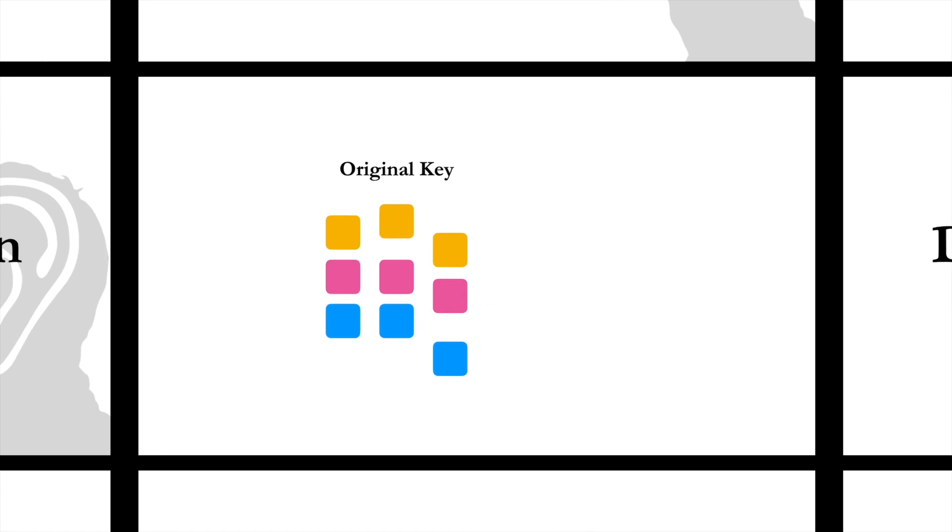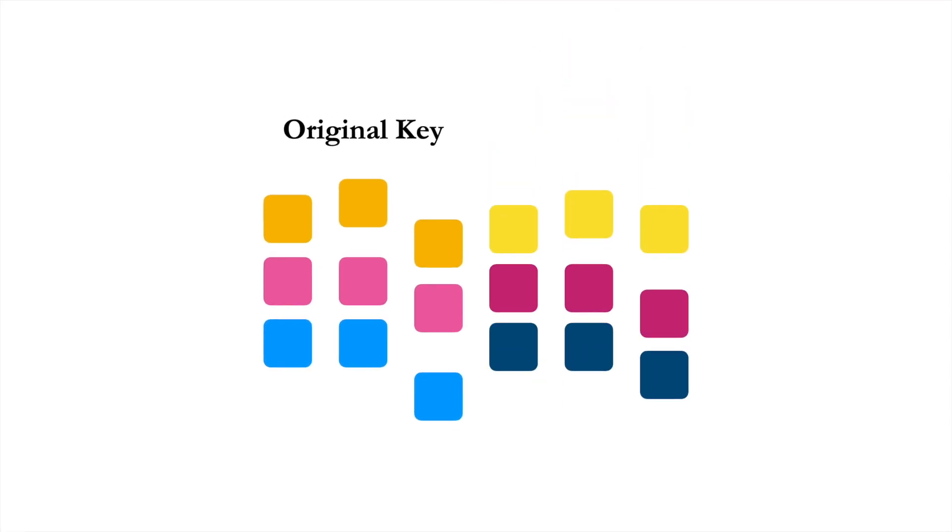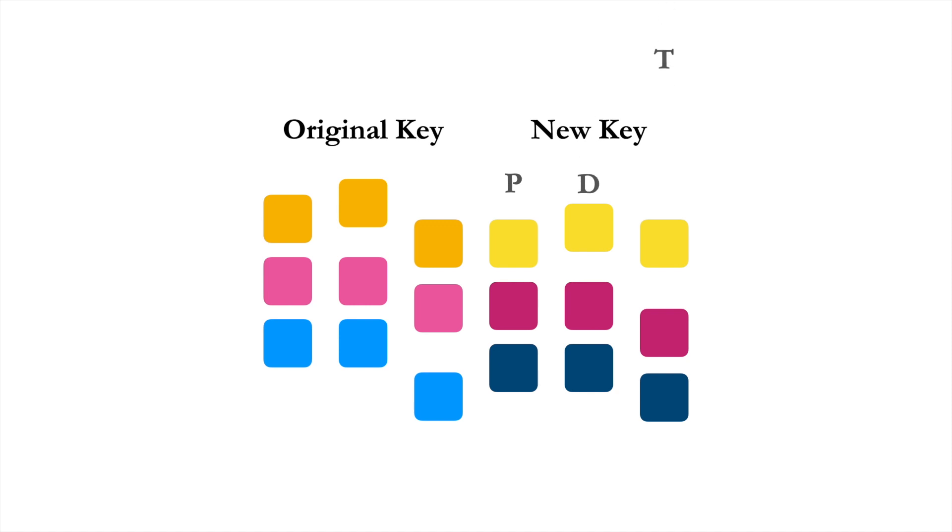To achieve the smoothest modulation, aim to produce at least a three-chord progression in the new key: a pre-dominant, a dominant, and then a tonic chord. This builds up momentum toward the new tonic.